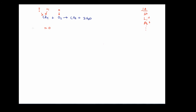Setting up the equation, I'll indicate carbon as the unknown. There are four hydrogens, and each hydrogen is worth plus one. So the equation reduces to C plus four equals zero. Therefore, the oxidation number on the carbon in CH4 is minus four.